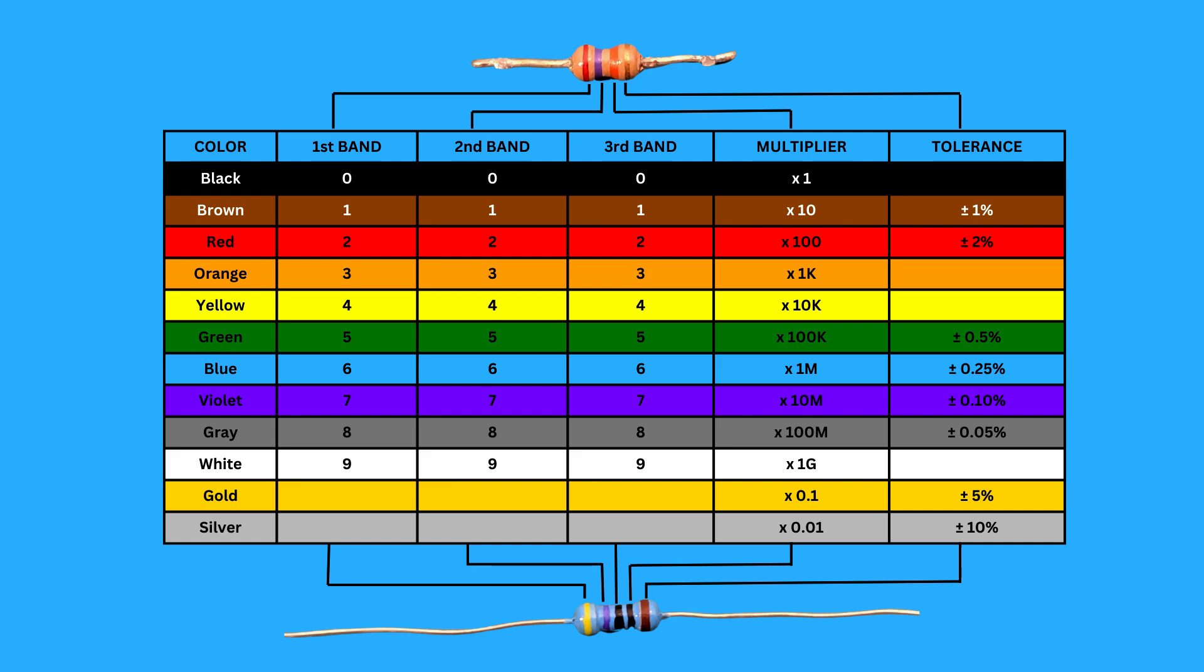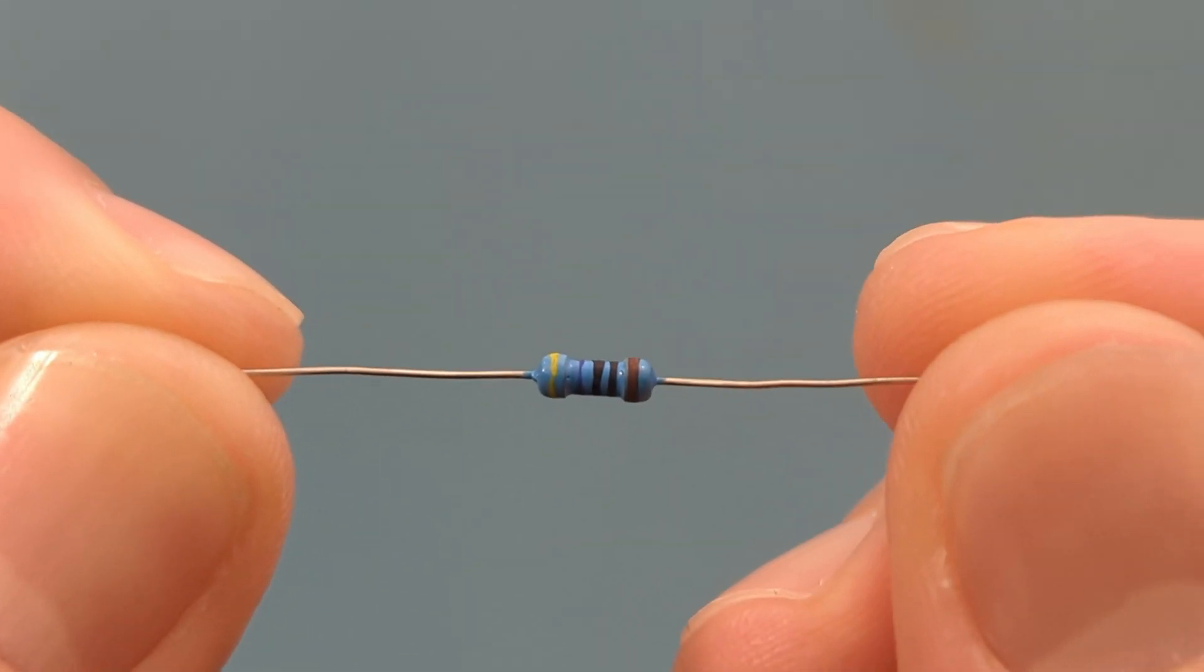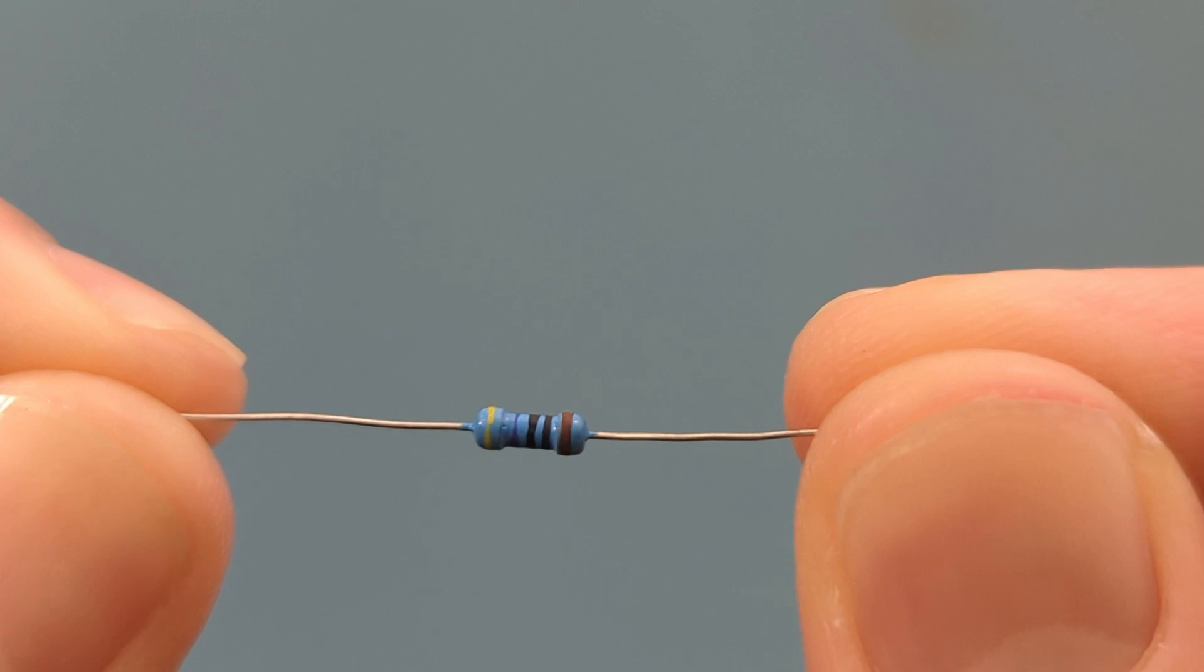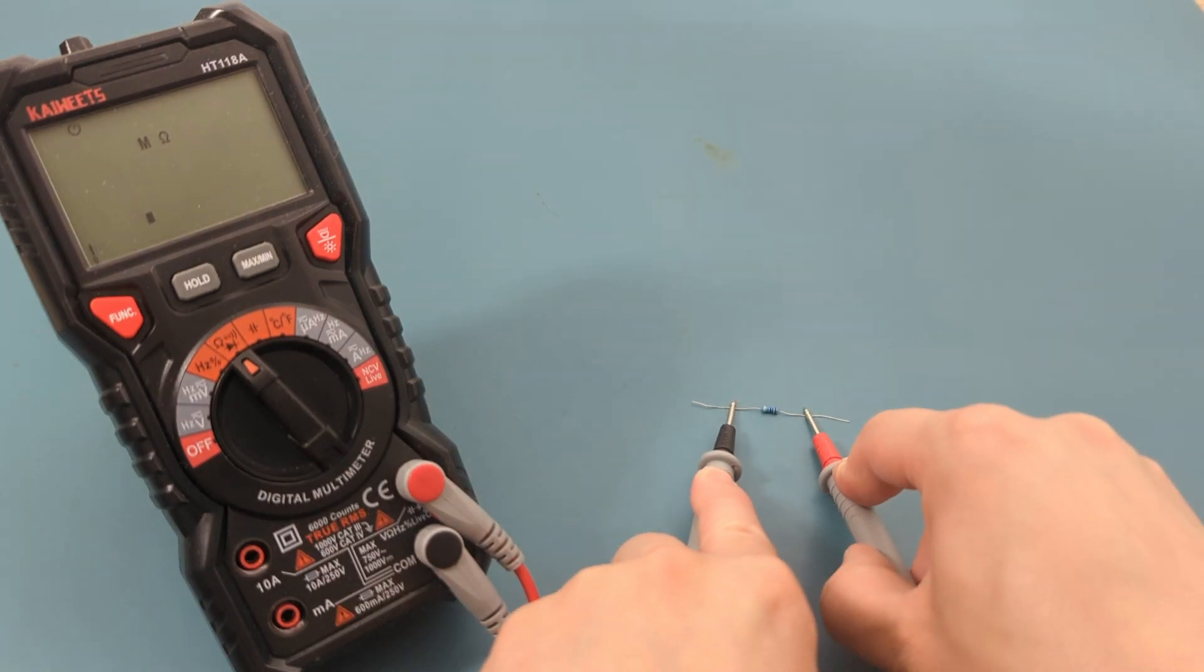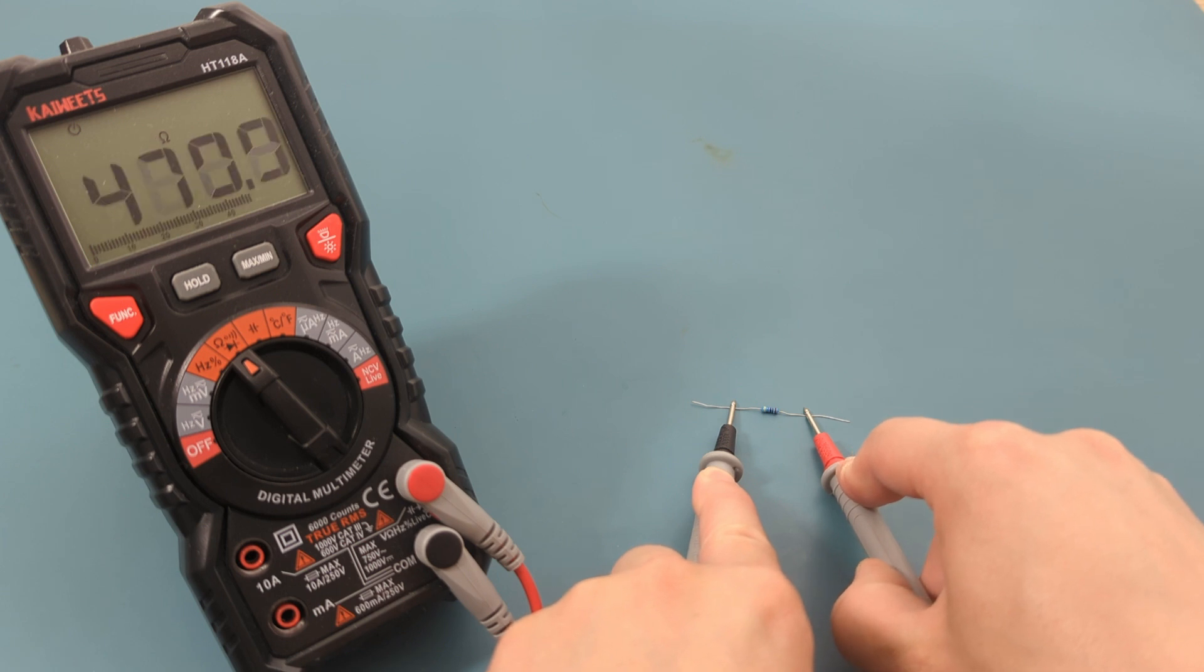After a while, you'll start recognizing common resistor values. Just by glancing at the colors, you'll know this is 470 ohms or 27,000 ohms. If you're ever unsure about the resistor value, you can use a multimeter to get an exact reading in seconds.